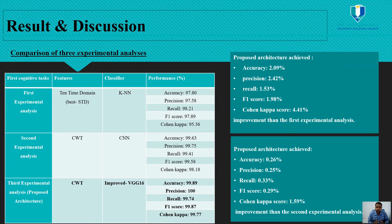To further show the effectiveness of the proposed improved VGG-16 model, we also conducted different experiment analyses. From this table, we can see that our proposed architecture achieved a 2.09% improvement in accuracy compared to the first experiment analysis, and a 0.26% improvement in accuracy compared to the second experiment analysis.